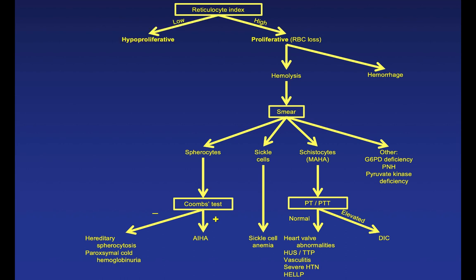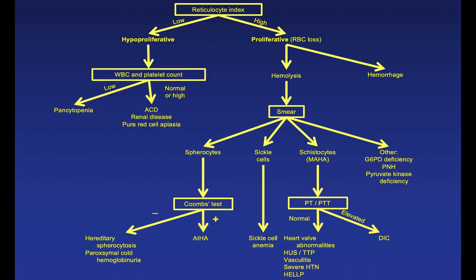If the reticulocyte index is low, we call that hypoproliferative, and we check a white count and platelet count. If those are also low, it's pancytopenia. Pancytopenia is usually due to hypersplenism — causing mild to moderate pancytopenia, ruled out by CT or ultrasound — or more likely, a bone marrow process. That process can be a nutritional deficiency such as B12 or folate, malignancy invading the marrow known as myelophthisic disorders, tuberculosis, fungal disorders, or aplastic anemia from drugs, toxins, or viruses. We typically perform a bone marrow biopsy if the patient has pancytopenia after ruling out splenomegaly.